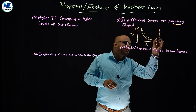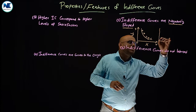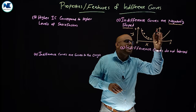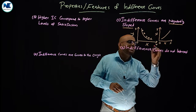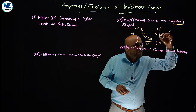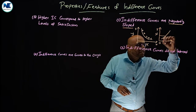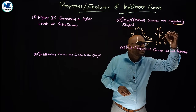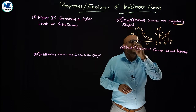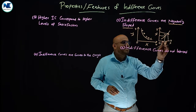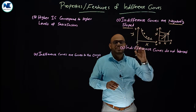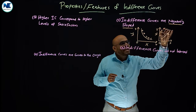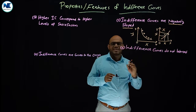If an indifference curve were upward sloping, consider combination A and combination B on such a curve. At combination B, the consumer has more of both goods, so a rational consumer would clearly prefer B over A — they would not be indifferent. Therefore, an upward sloping indifference curve is not correct.